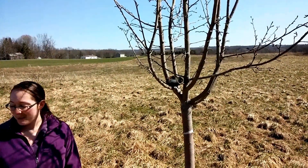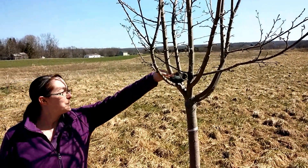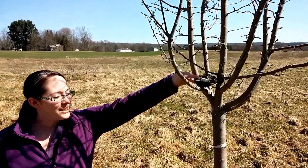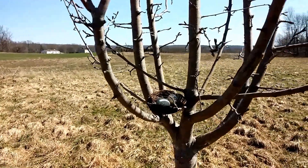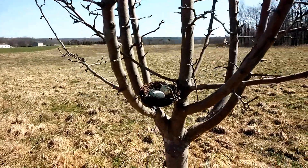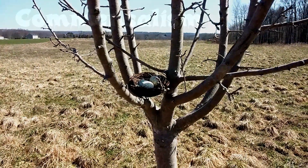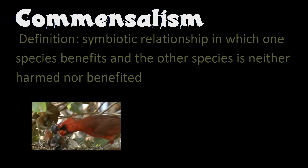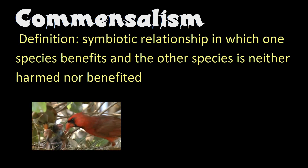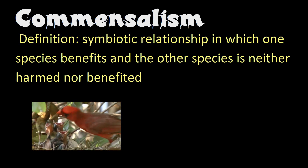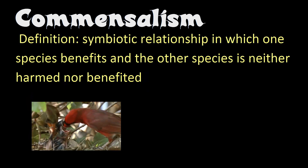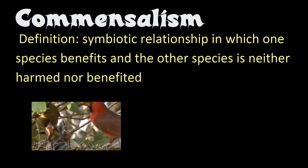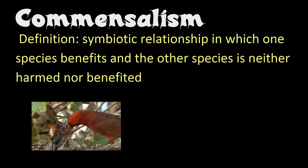Here's our example of commensalism. We have a bird's nest in a tree. In this situation, the one benefiting would be the birds — both the parents and the babies. The height of the tree offers protection from a variety of predators. In the meantime, the tree is neither helped nor harmed by the existence of the nest.